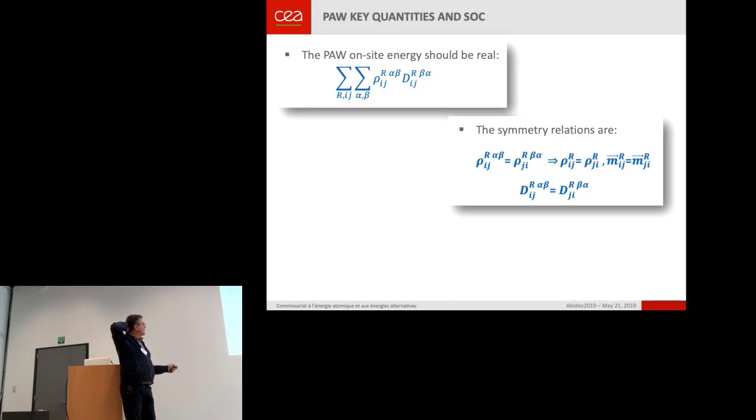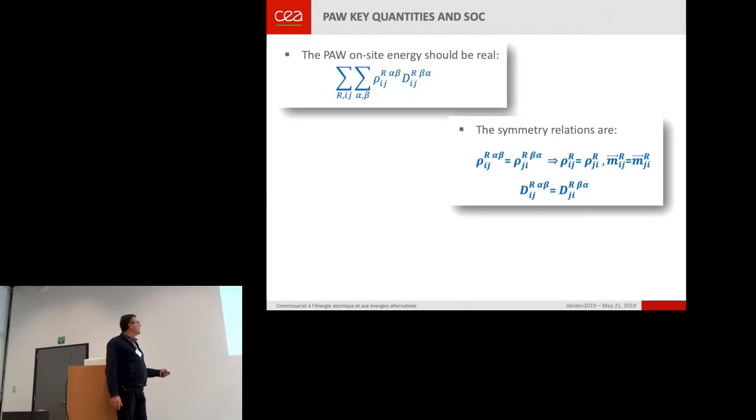You have this symmetry relation. You have this matrix is no more only Hermitian with respect to the partial waves, but also with respect to the spinor component. And you have, but if you use the other formalism, it is still Hermitian. And the same for the Hamiltonian, for the non-local operator.